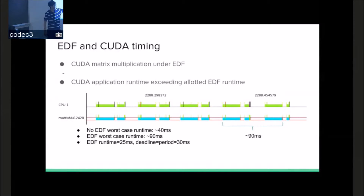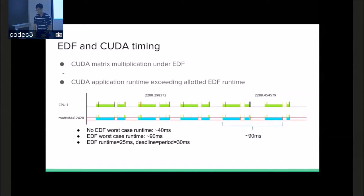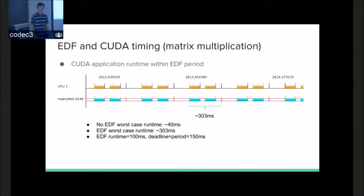For some reason, 90 milliseconds covers one period and then part of another one — that's not very good. What happens if we have a task with a runtime less than the allotted runtime? It's not much better. The operation is still 40 milliseconds; I bumped the allotted runtime to 100 milliseconds, and we get 303 milliseconds. So where in the world did we go wrong?